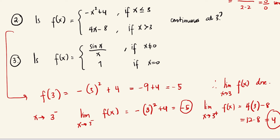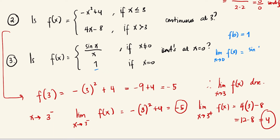For number three, f(x) = sin(x)/x if x ≠ 0, and 1 if x = 0. Is this continuous at x = 0? Obviously, f(0) = 1 by definition. The limit of f(x) as x approaches 0 is sin(x)/x, which equals 1. Since the limit equals f(0), they coincide, and therefore this function is continuous.